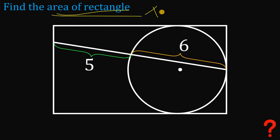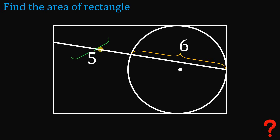To find the area of this rectangle, we need the base multiplied by its height. We don't have the base or the height yet. To start, place the segment of 5 on the top, so the full segment from this point to this point equals 5 plus 6, which is simply 11 units.